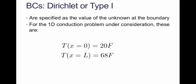Dirichlet boundary conditions are specified as a value of the unknown at the boundary. In the case of the 1D conduction problem, we were given an inside temperature and an outside temperature at the edge of the wall, displayed here as T at x=0 and T at x=L. T is the unknown that we're looking for.